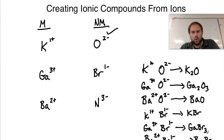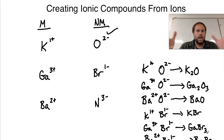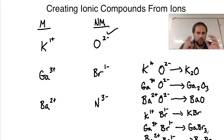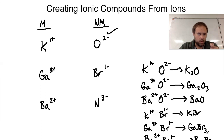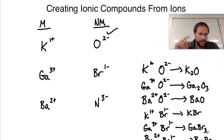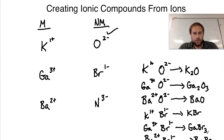Hopefully this video helped tie together how you take charged ions from the periodic table and bring ionic elements together to create ionic compounds. Match your metals with your non-metals, get the correct ratio, and that's the result. This lesson is paired with learning charges from the periodic table, so if you didn't watch that lecture, go back and make sure you're confident with it first — the link will be in the description. Take care, everybody.